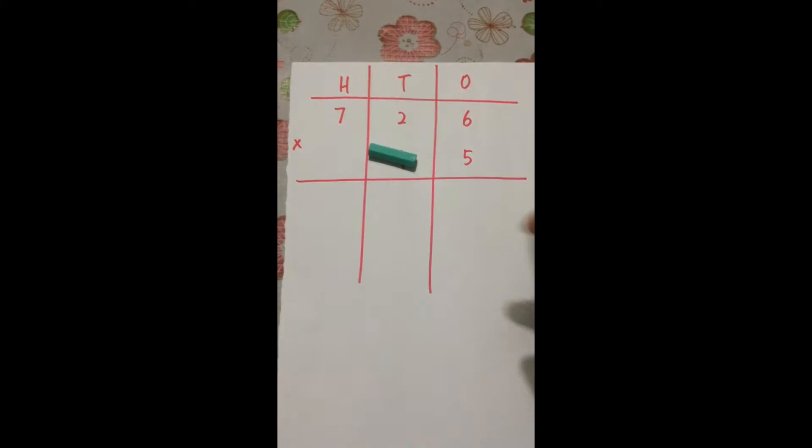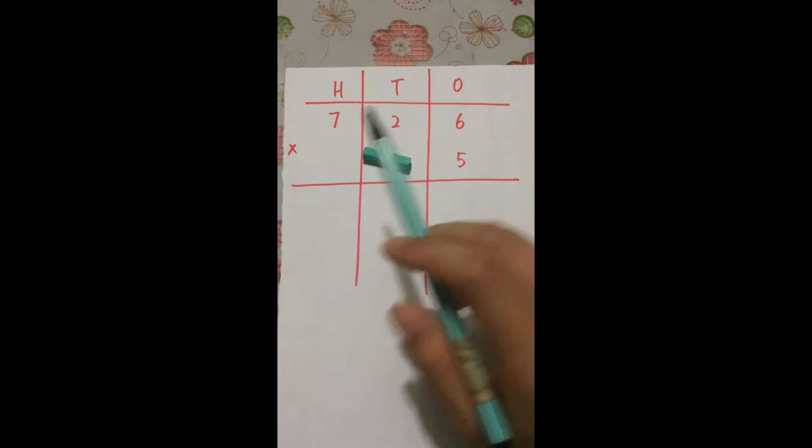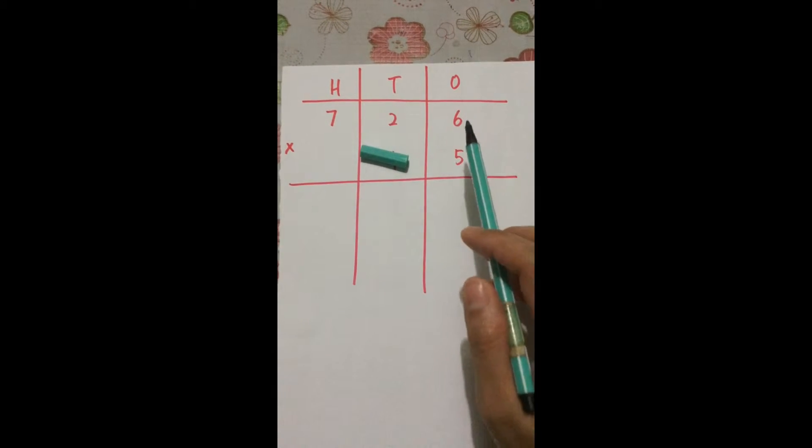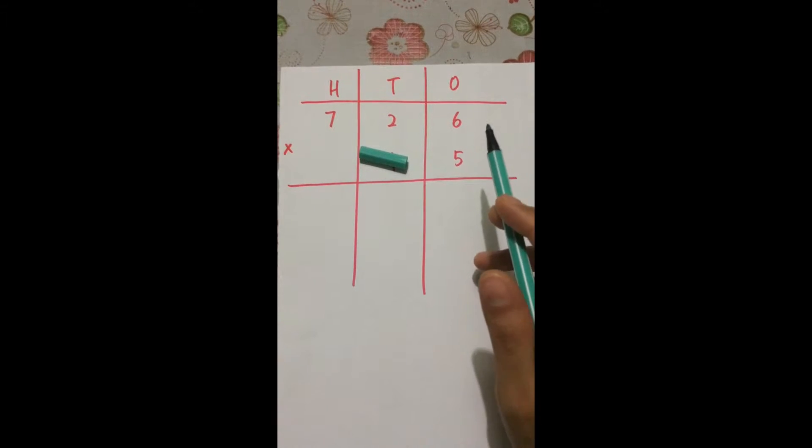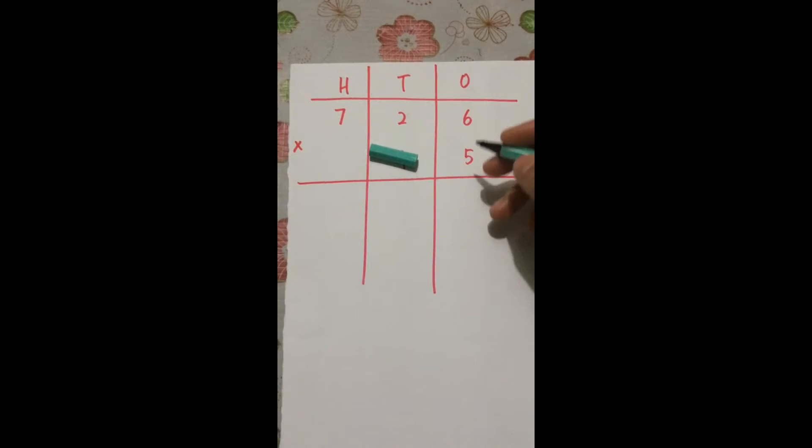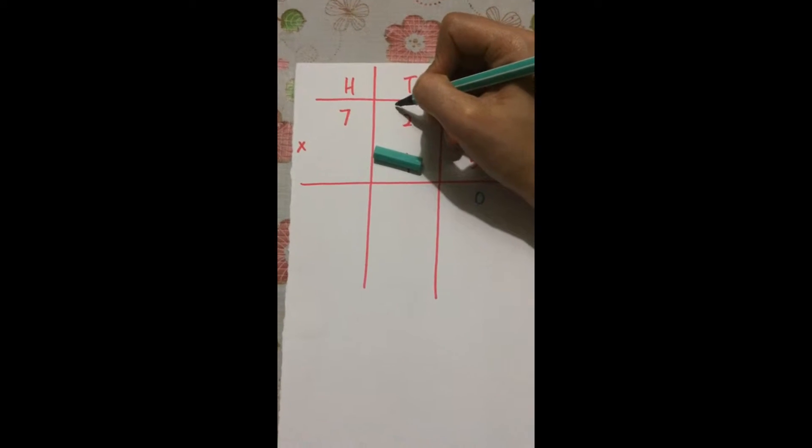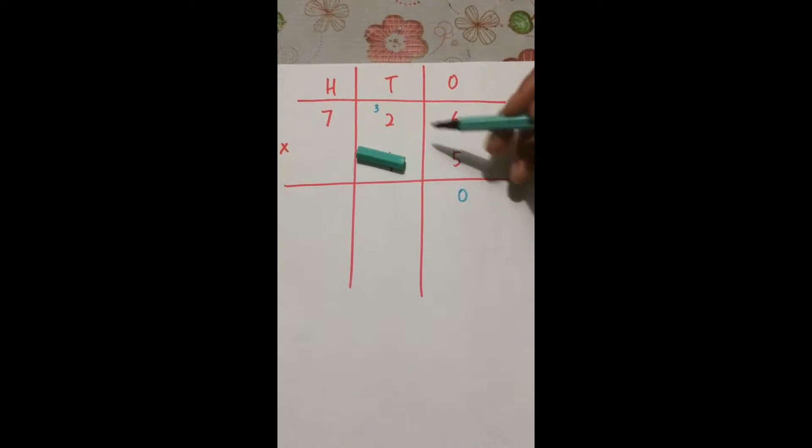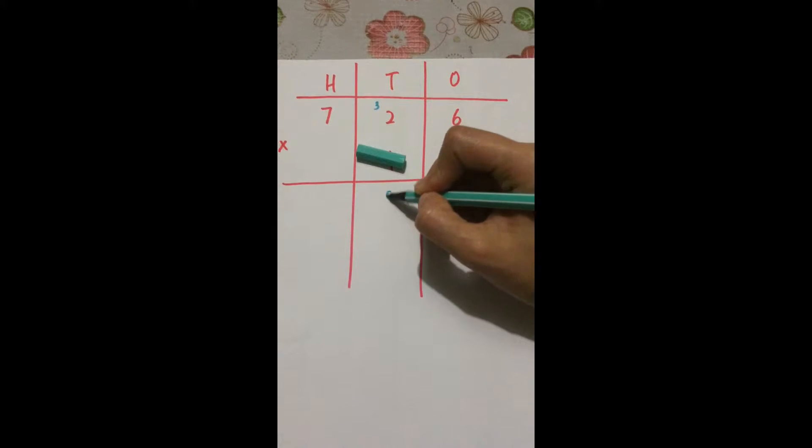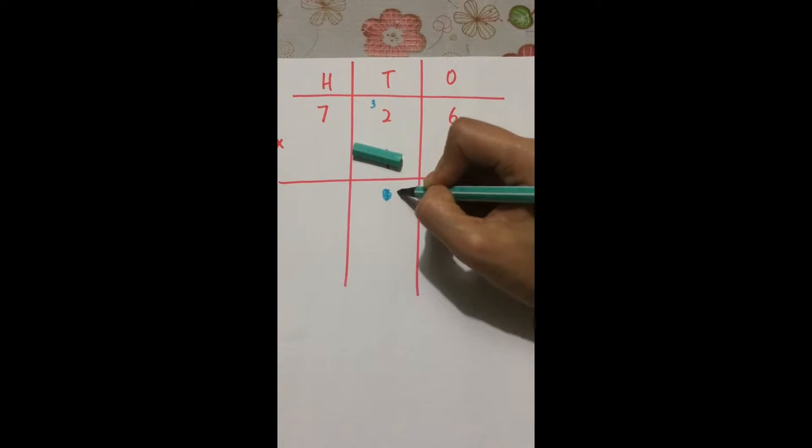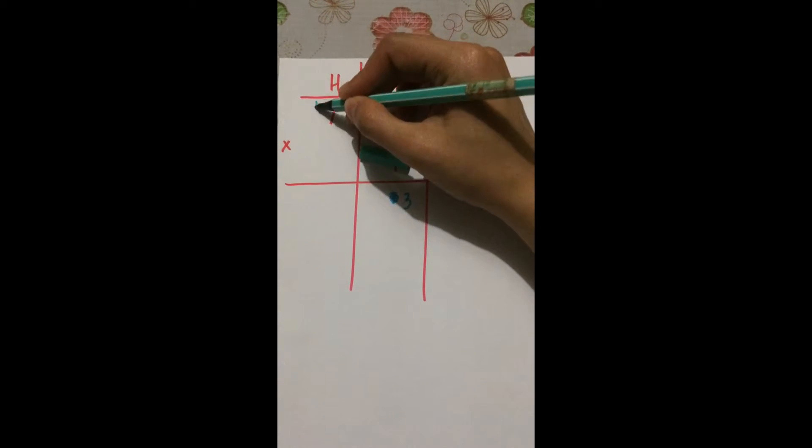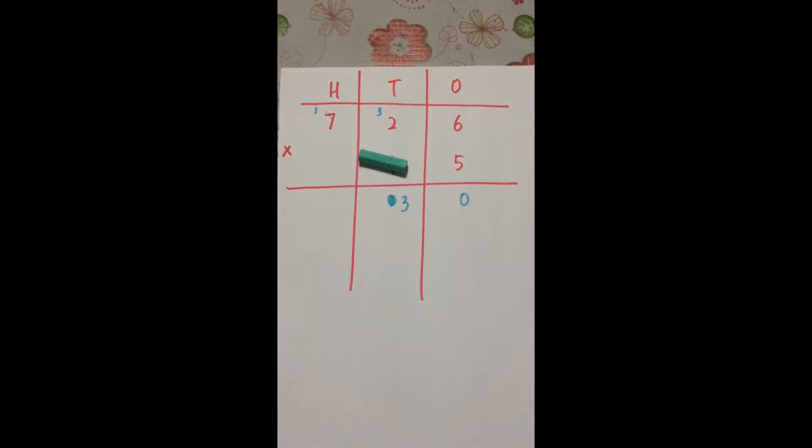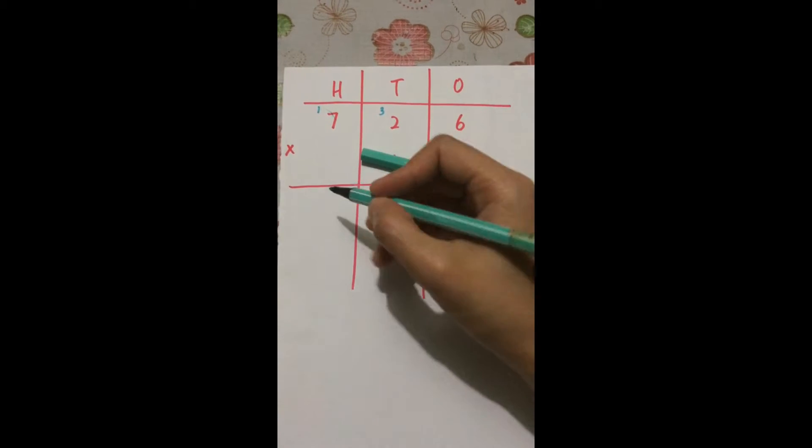The first step is to take 726 times 5. 6 times 5 is 30. 2 times 5 is 10, plus 3. 7 times 5 is 35, plus 1.